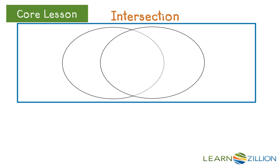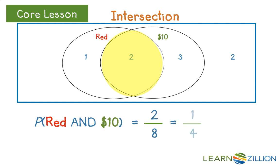Here we see a Venn diagram with the intersection. Once again, the probability of the intersection is 2 divided by 8, or 25%.